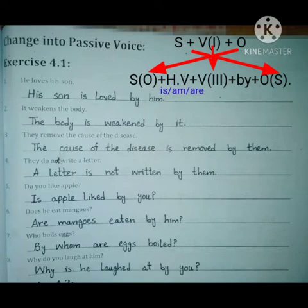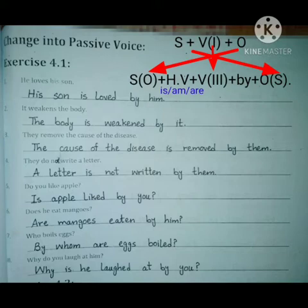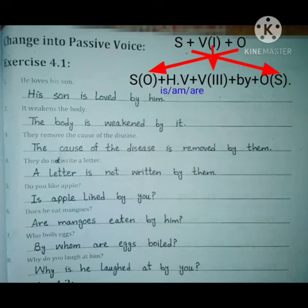You can see here: the object comes at the start, the subject moves to the last position, the verb stays in its place but becomes the third form. Before the verb, we put a helping verb. For present indefinite, the helping verbs are is, am, and are. Before the subject we put 'by.' So let's start — sentence number one: He loves his son.